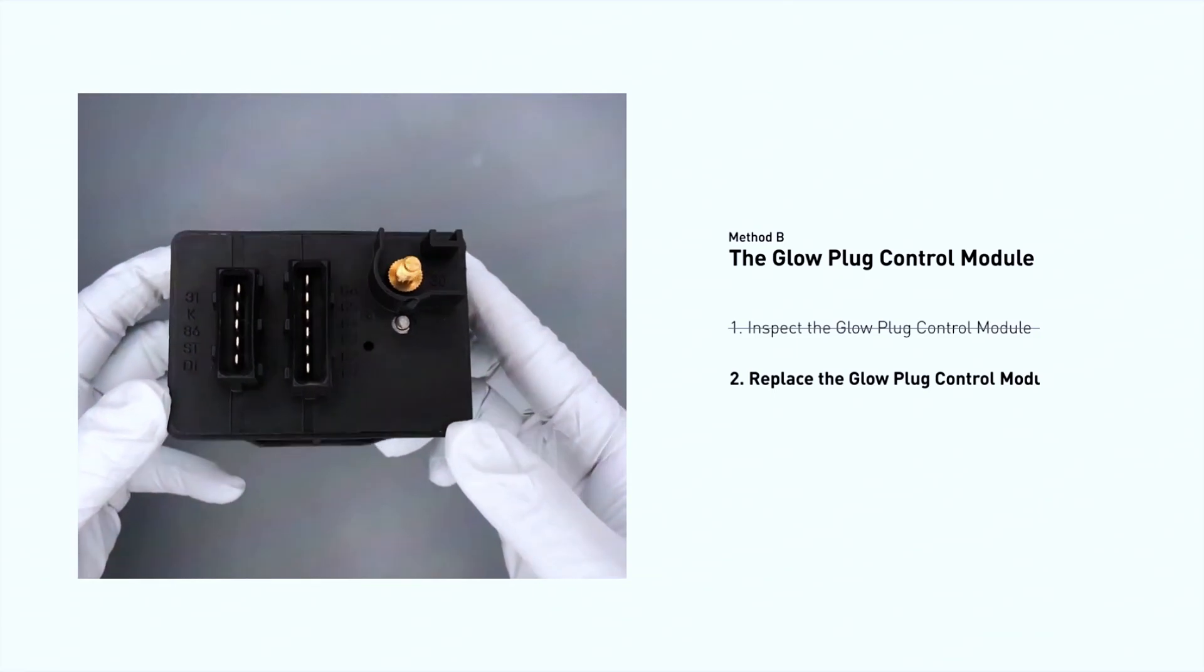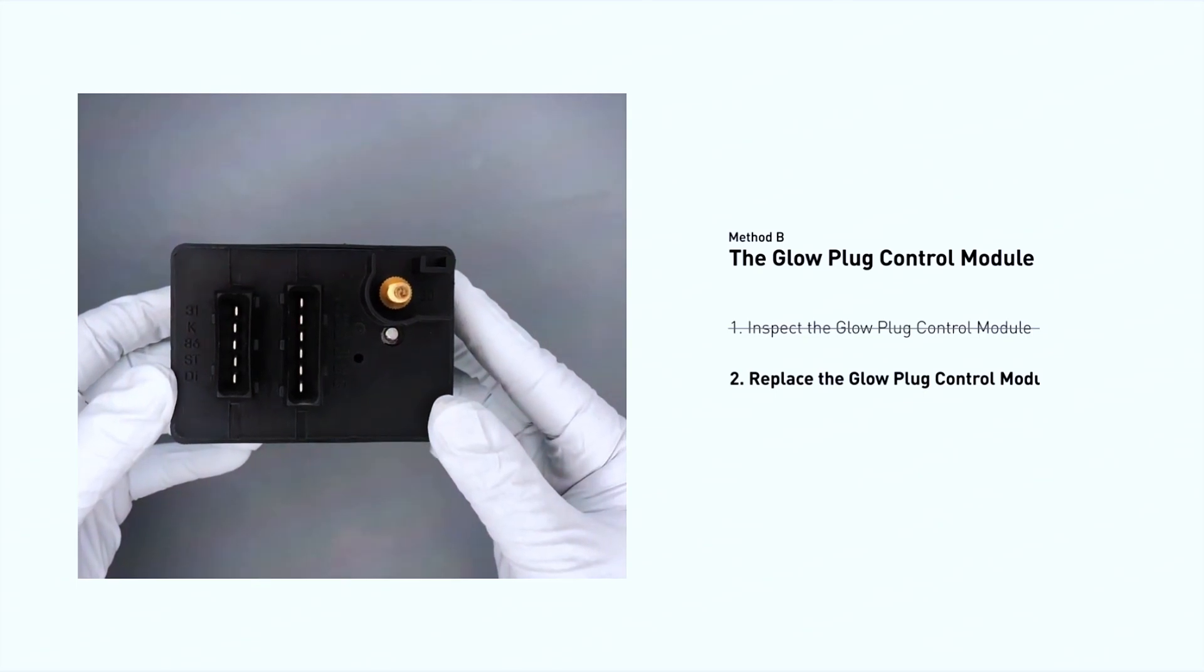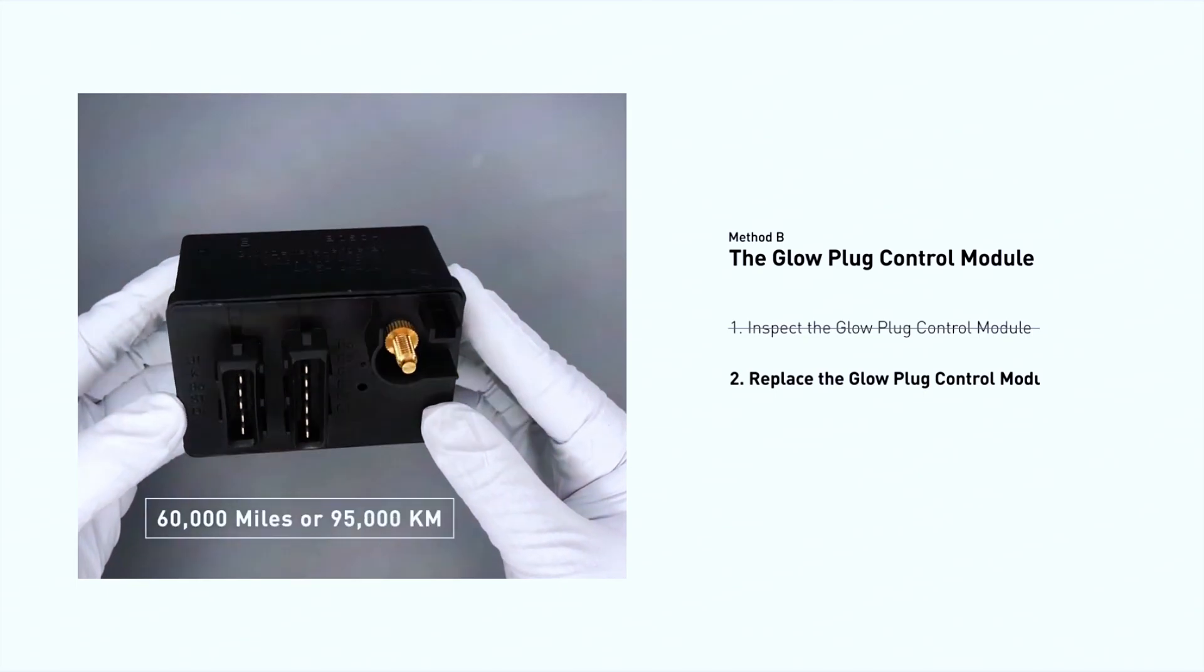Replacing your glow plugs or glow plug control module is a straightforward project that is recommended every 60,000 miles or 95,000 km. Finally, use an OBD scanner to clear the code and start the engine.